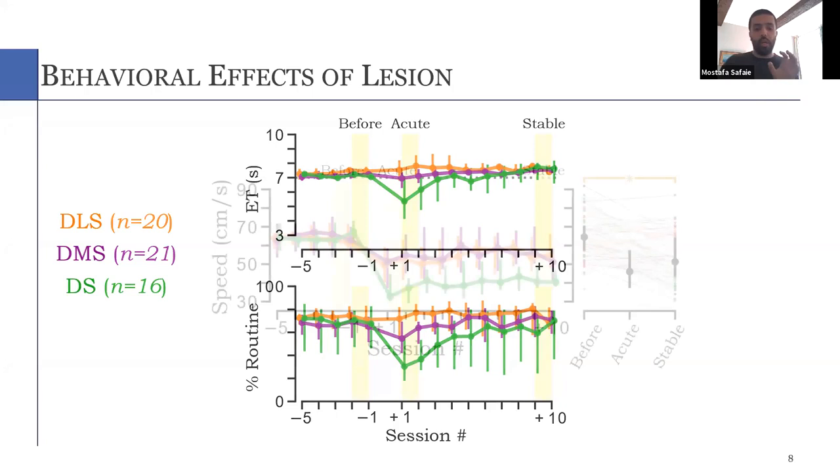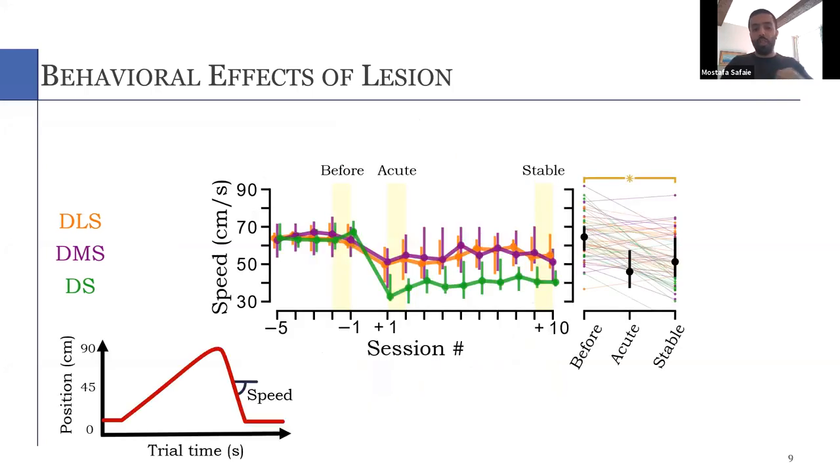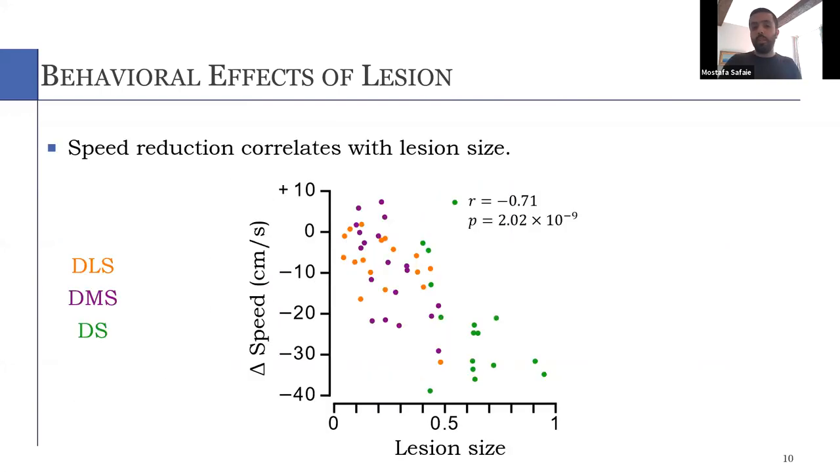However, if you look at the speed, and by speed I mean the speed with which the animals outrun the treadmill, we see a big, robust and irreversible effect in all the groups. And interestingly, this effect, the reduction in the speed correlates very well with the size of the lesion.